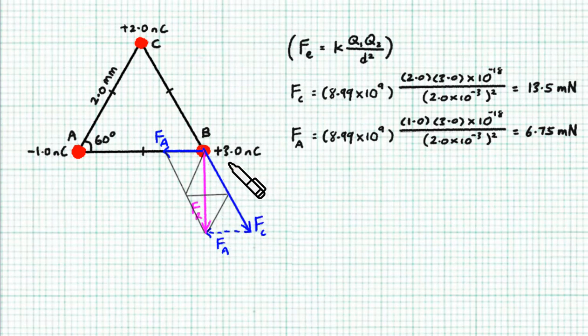it's quite clear that the horizontal component of Fc, which is about this long, is exactly cancelled out by Fa. So we're left with just this component, which is the resultant force.